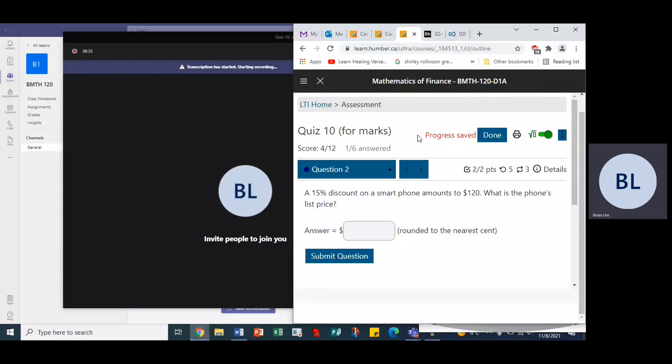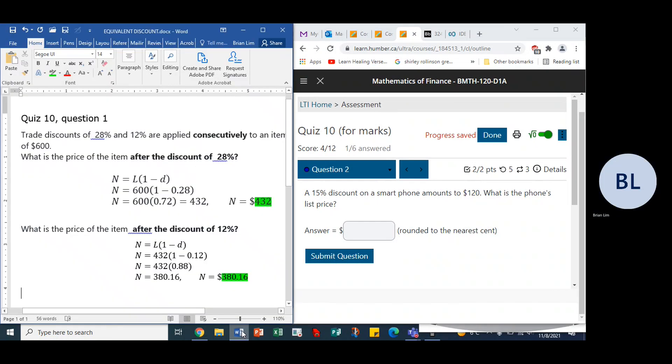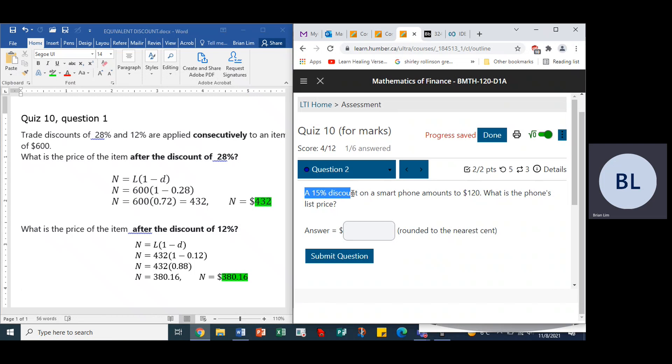OK, so here we are, this is quiz 10 question 2. Alright, so a 15% discount on a smartphone amounts to $120. What is the phone's list price?